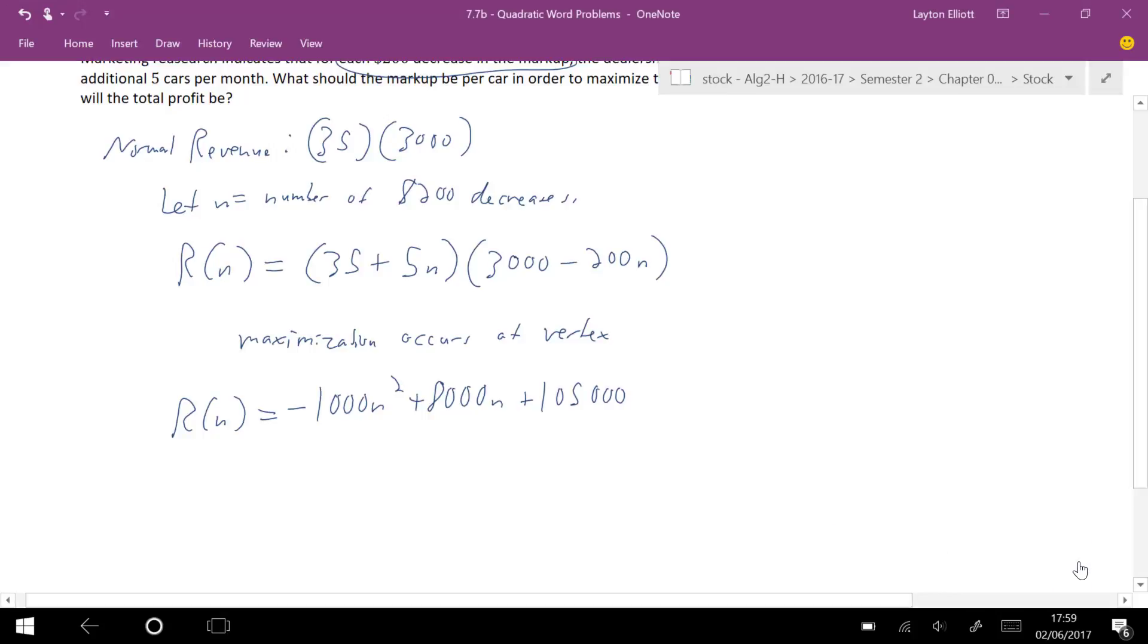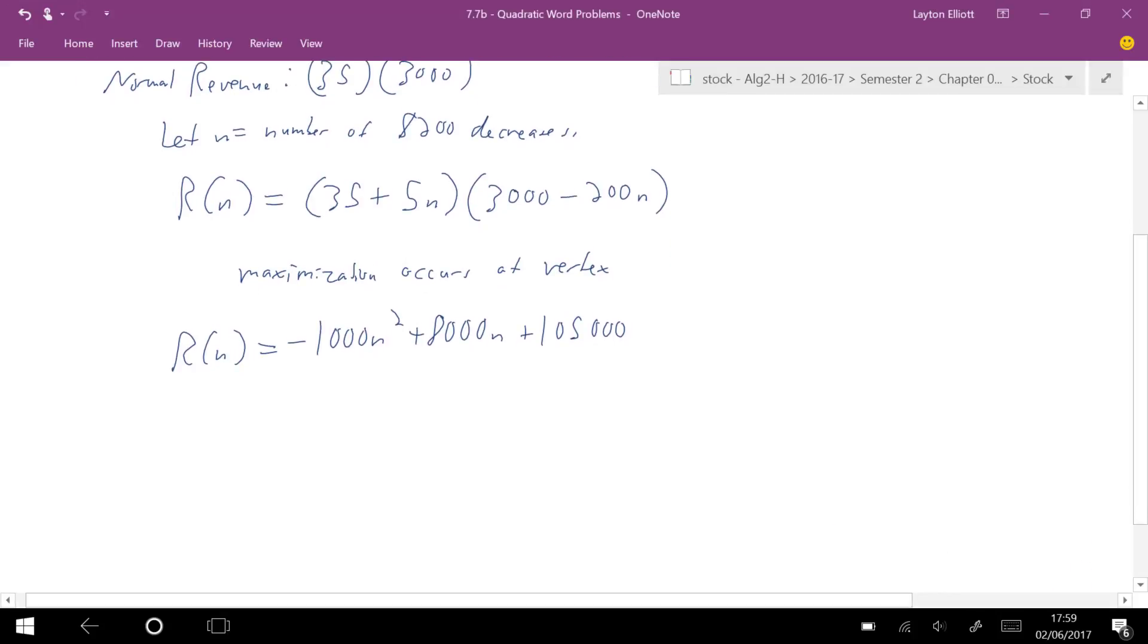So this is kind of the equation I'm dealing with. Now, one of the ways that I can tell what the vertex is is if I complete the square. So if I do that, I can go negative 1,000, pull that out, and I get N squared. This would be minus 8N plus a box. Then I have plus 105,000, minus negative 1,000 times whatever that box is. Well, half of 8 squared is 16.